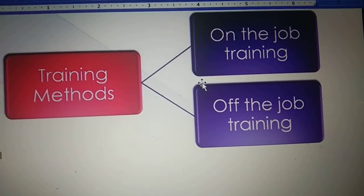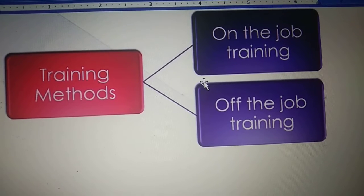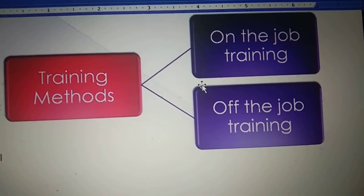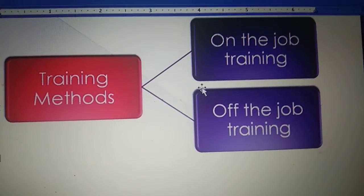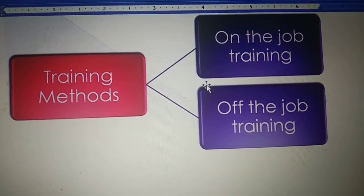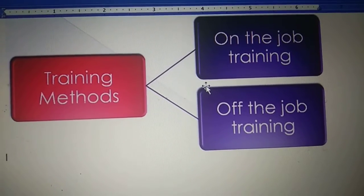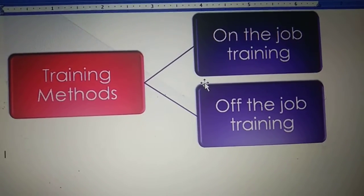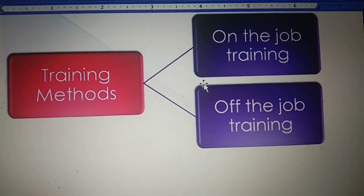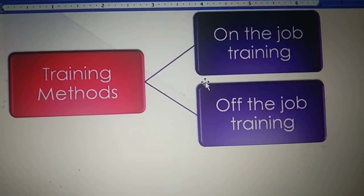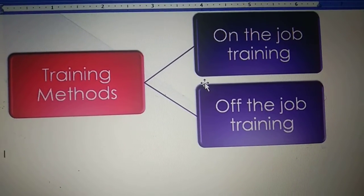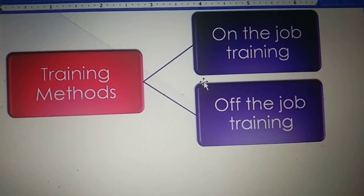The employee is working in the organization and there is somebody — a supervisor — who will be guiding him, instructing him, or providing him training. Because all this training is provided while the employee is working, we call this on-the-job training method. The next type is off-the-job training method.